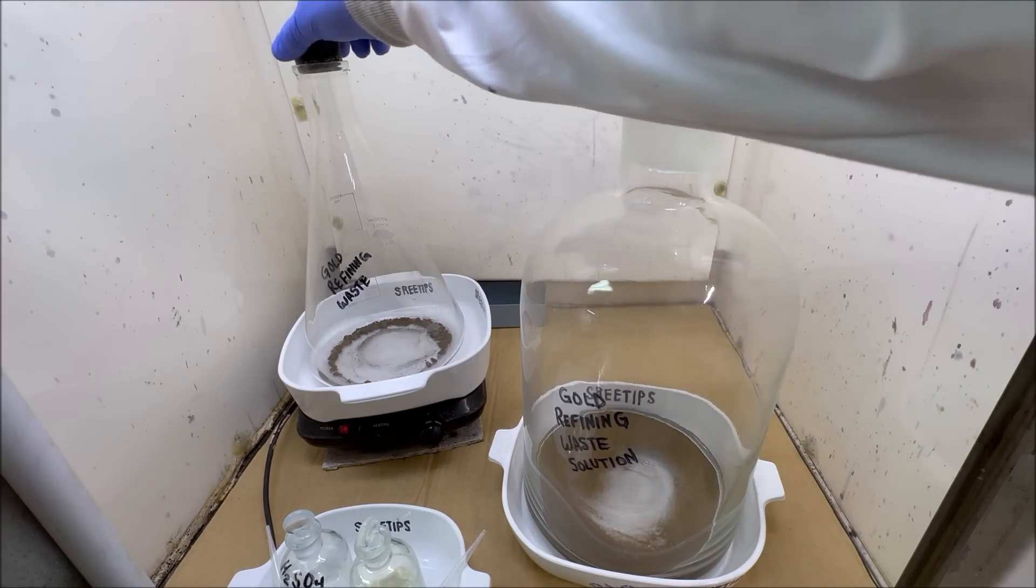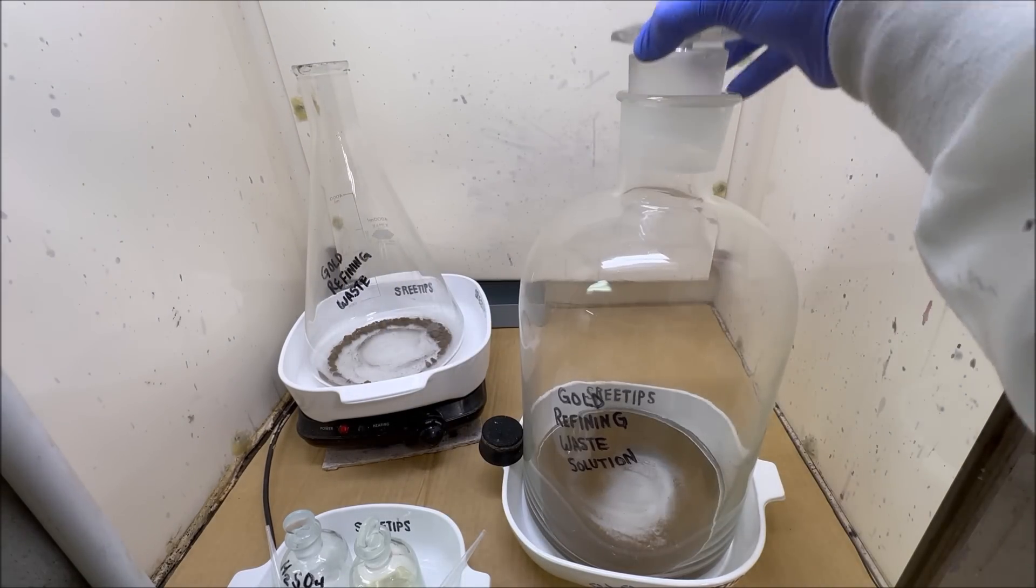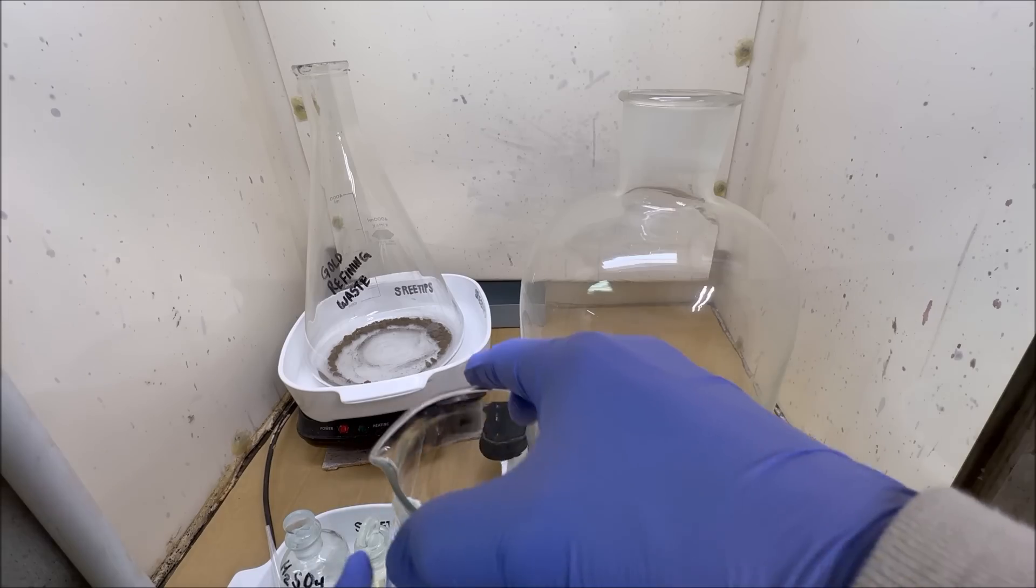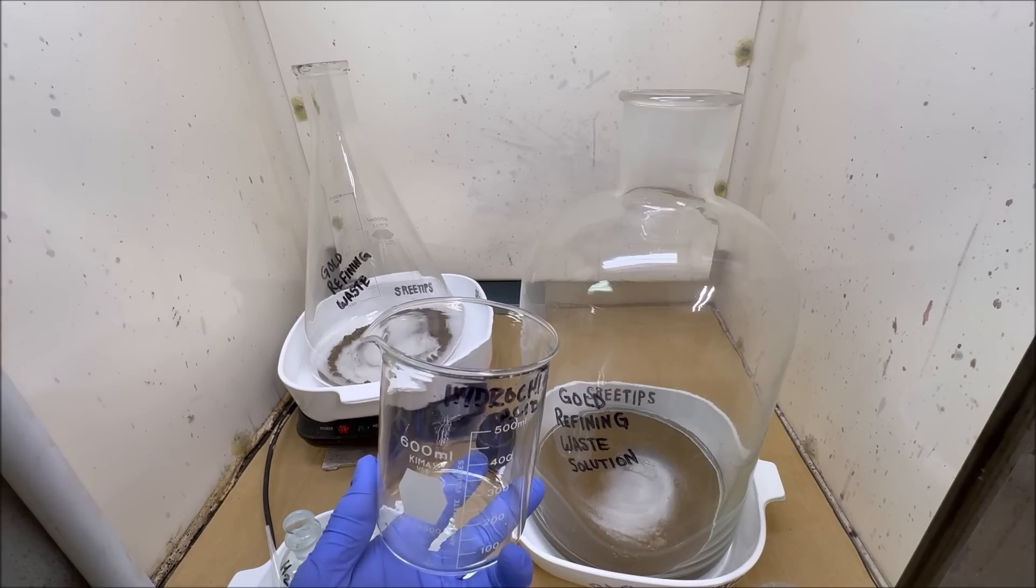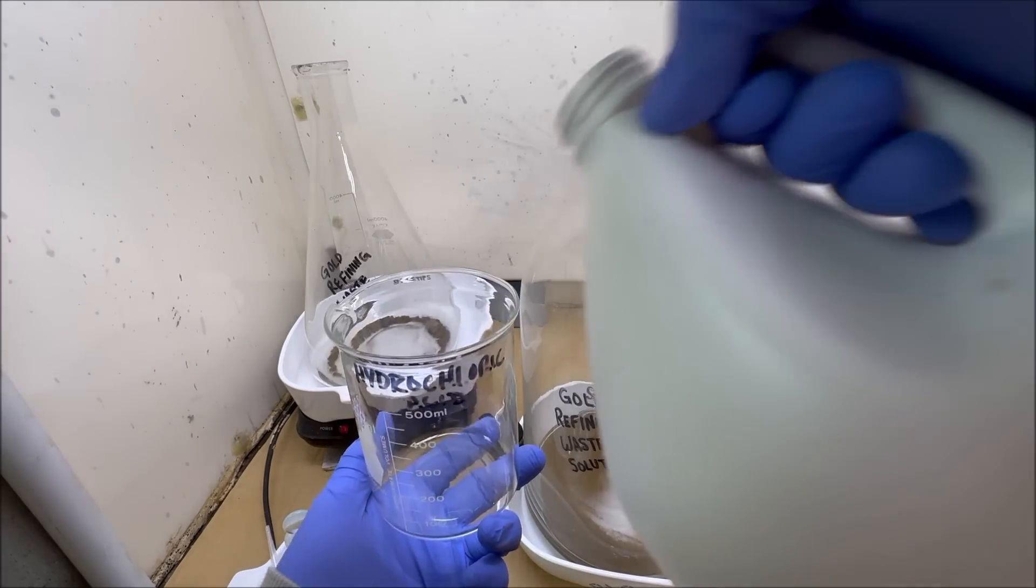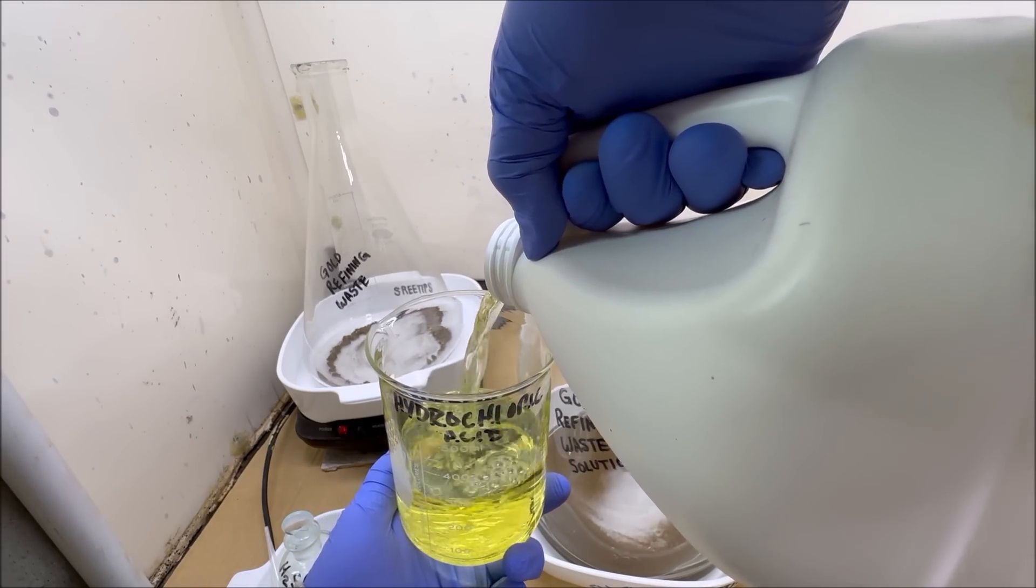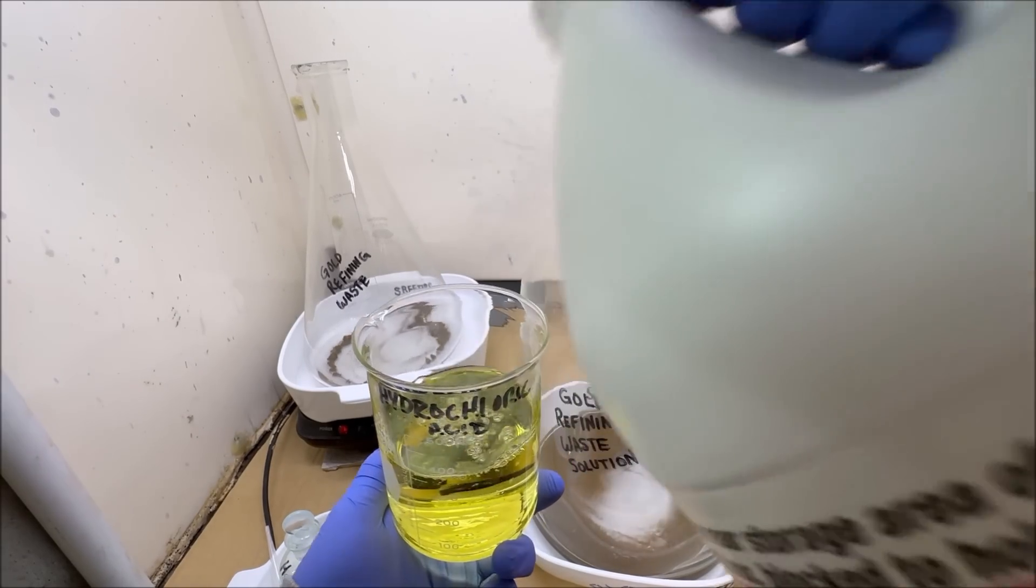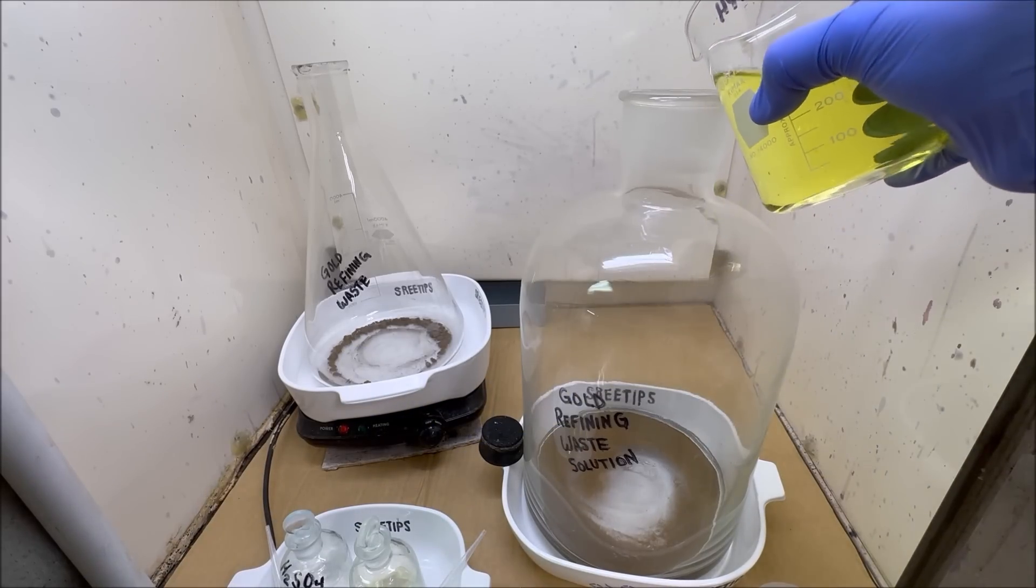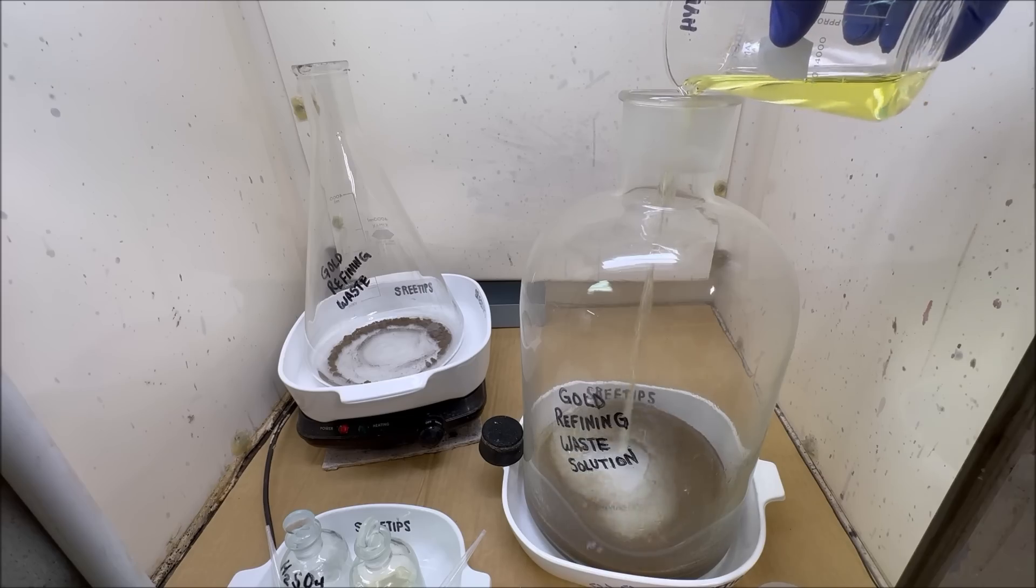Welcome back to my channel everyone, Sweet Tips here. I have two containers that contain my gold refining waste. When I refine gold, I rinse off the gold powder after it's been precipitated with multiple water and hydrochloric acid rinses. Today, we're going to add hydrochloric acid to both of these containers.